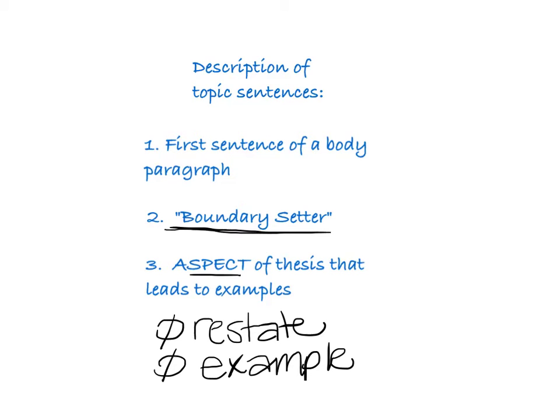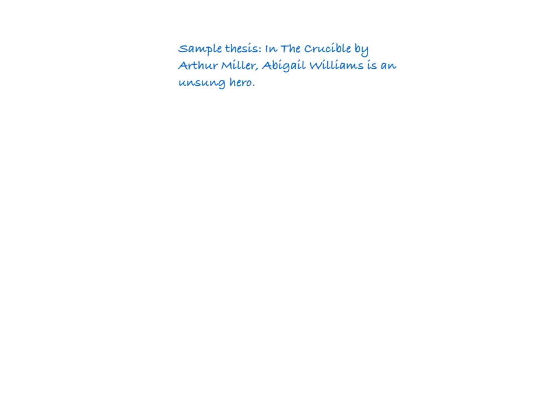So let's see what I'm talking about. Let's work with a sample thesis. I came up with a thesis that I thought would honestly be indefensible — it would be terrible, nobody's going to write about this. That in The Crucible by Arthur Miller, Abigail Williams is an unsung hero. She's not — she's a really bad person. I just didn't want to use an idea anyone was going to write about.